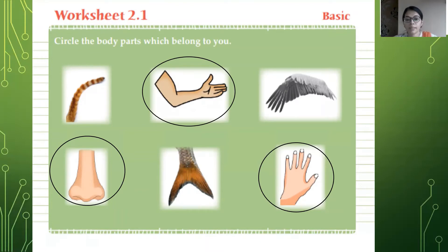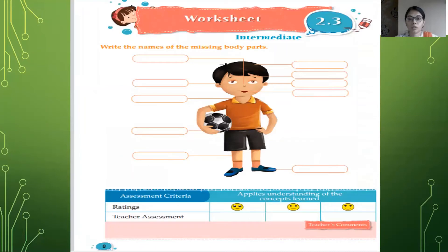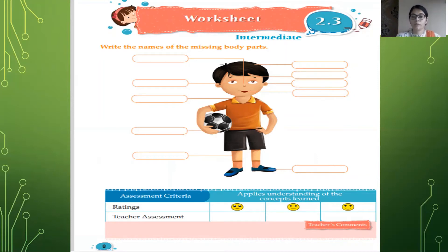Everyone has completed. Now let's see the next worksheet. The next worksheet is worksheet 2.3, page number eight. Over here, children, you are going to name the body parts. You can see the picture of a boy, and different parts of the body have lines with a space given in which you will write the names of the body parts. Let's solve this.